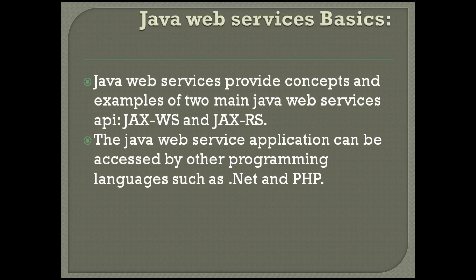There are two ways to write Java web service application code: using SOAP and using RESTful. The Java web service application can be accessed by other programming languages such as .NET and PHP. The Java application performs communication, and you can use SOAP and REST services. You can have Java web service APIs — JAX-WS and JAX-RS.